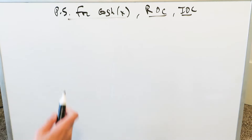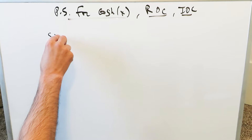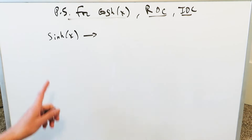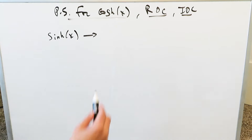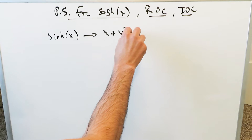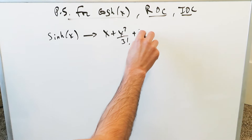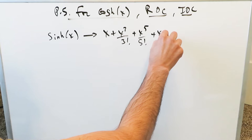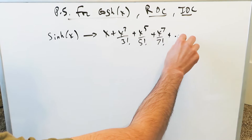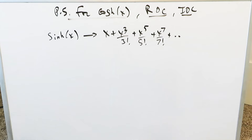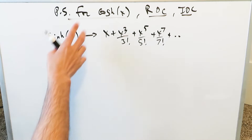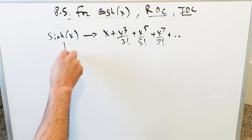Perhaps the easiest way of doing this is if you know the series for hyperbolic sine. We've looked at this in two separate videos. We know it is x plus x cubed over 3 factorial plus x to the 5 over 5 factorial plus x to the 7 over 7 factorial, and so on. With the hyperbolics, you always have positives for both the hyperbolic sine and the hyperbolic cosine.